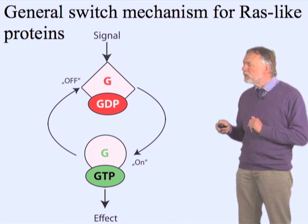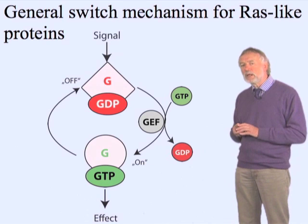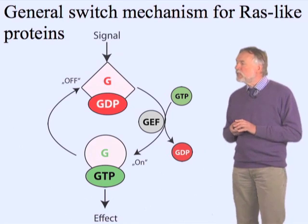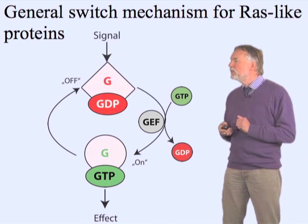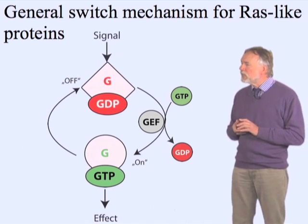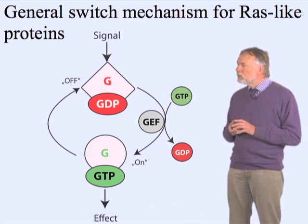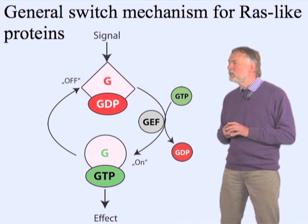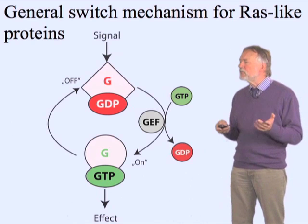In Ras-like proteins, it works the following way. These nucleotides are usually bound very tightly, in the picomolar range, such that GTP never comes off by itself, but requires the action of a nucleotide exchange factor, called a GEF — guanine nucleotide exchange factor — which allows GDP to be released much faster, and then allows GTP to bind to the protein. And now it is active.